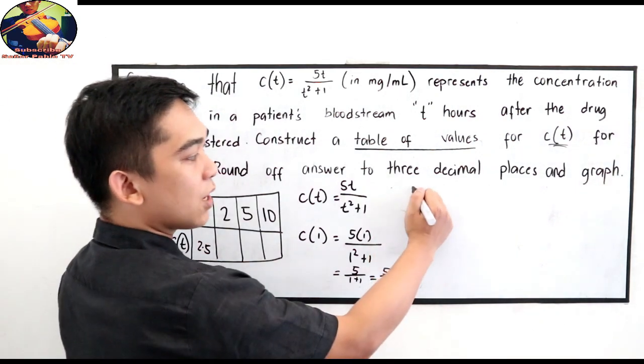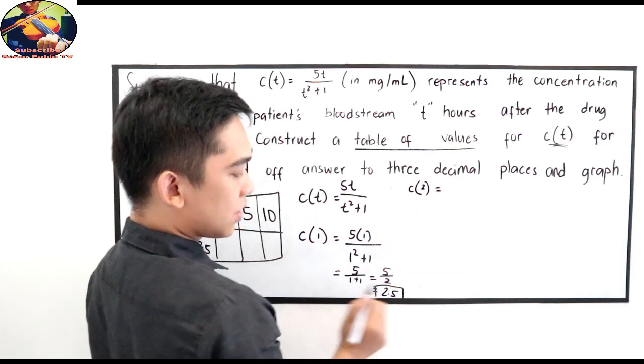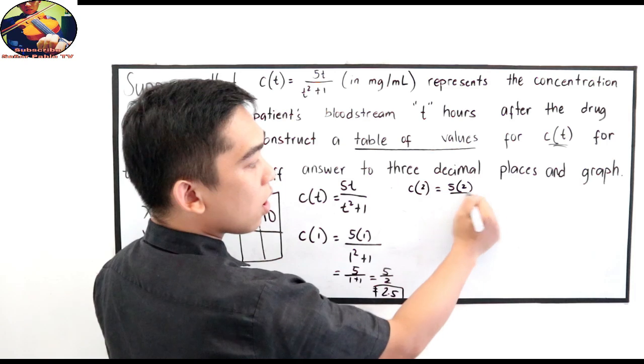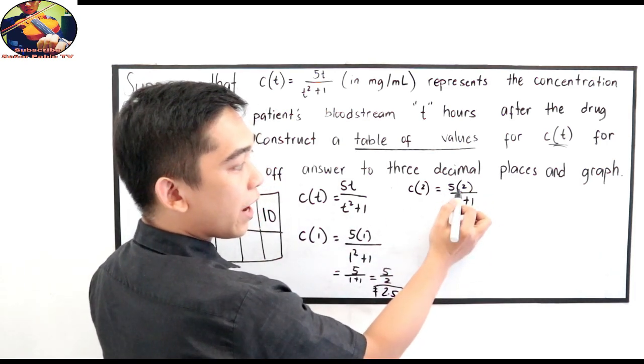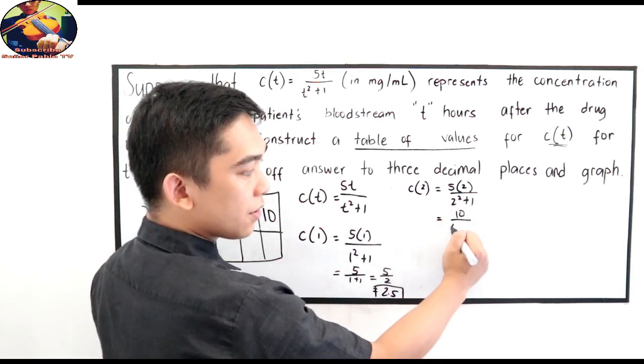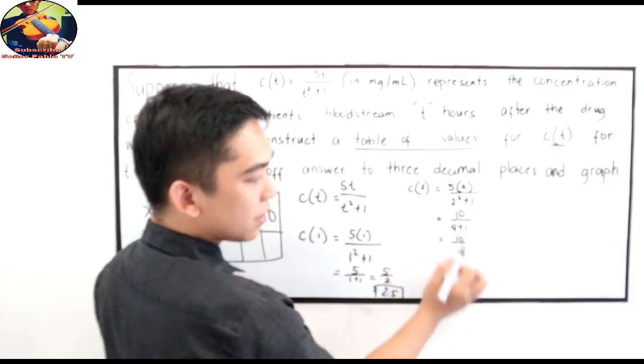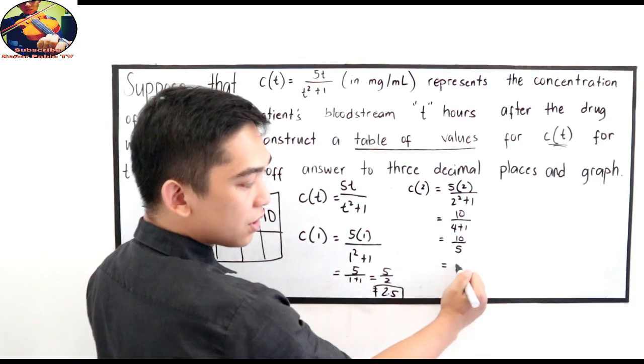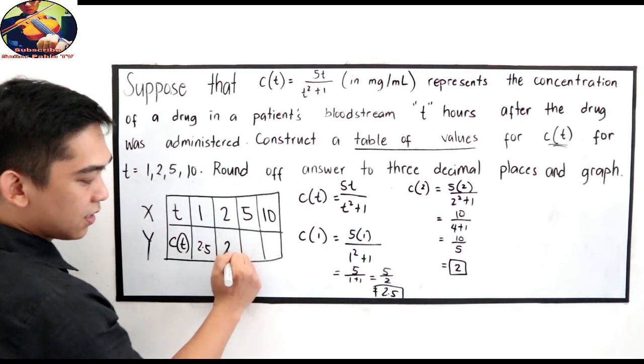Next, kapag mayroon tayong c of 2. C of 2, substitute lang natin. 5 times 2 all over 2 squared plus 1. 5 times 2, that is 10 all over 2 squared, 4 plus 1. 10 all over 5. 10 divided by 5, 2. Ang c of 2 natin ay 2.